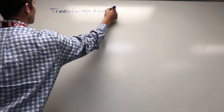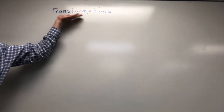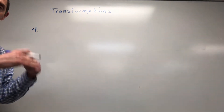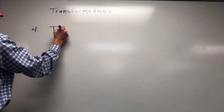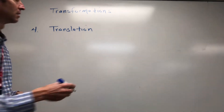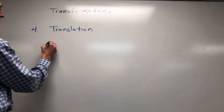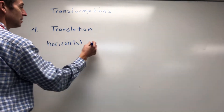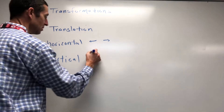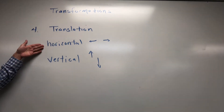We've got to identify the parent functions, and then the next step is to move them. These movements are called transformations. There are two kinds we're going to cover today: translations and reflections. A translation either shifts the graph left or right horizontally, or up and down vertically.